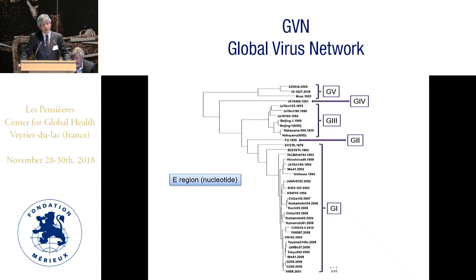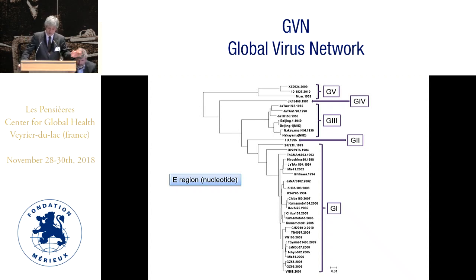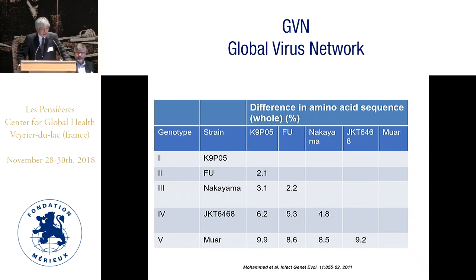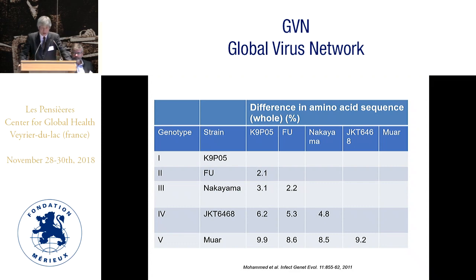JE virus is composed of five genotypes: genotype 1, 2, 3, 4, and 5, based on the E-gene nucleotide sequence. There are around 9% amino acid differences between genotype 5 and genotypes 1, 2, 3, and 4. This data was published in Infection, Genetics and Evolution in 2011.